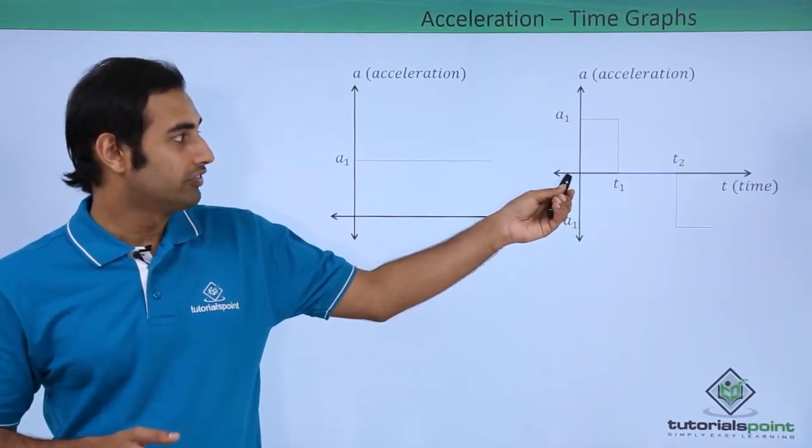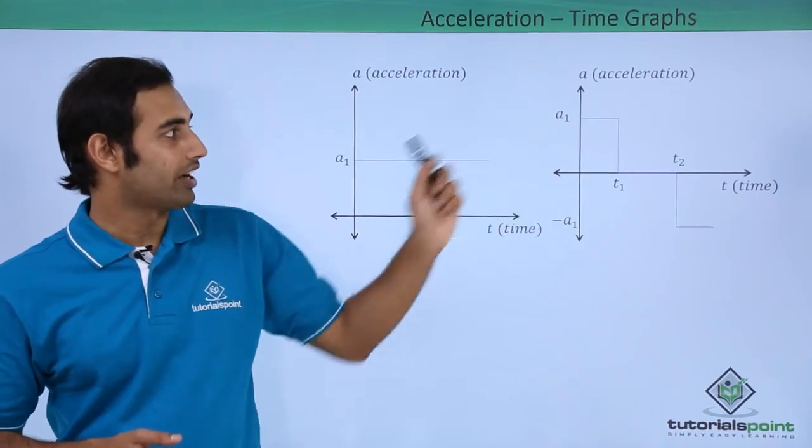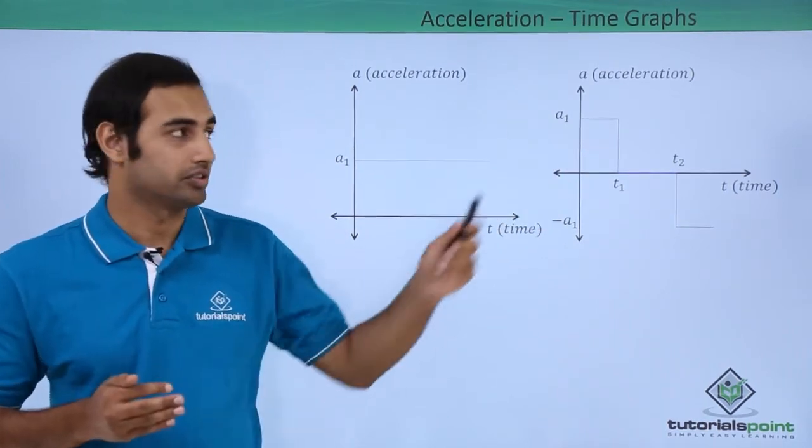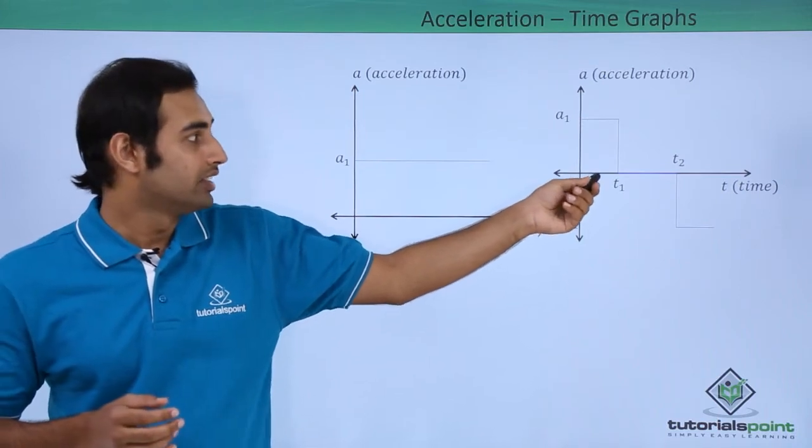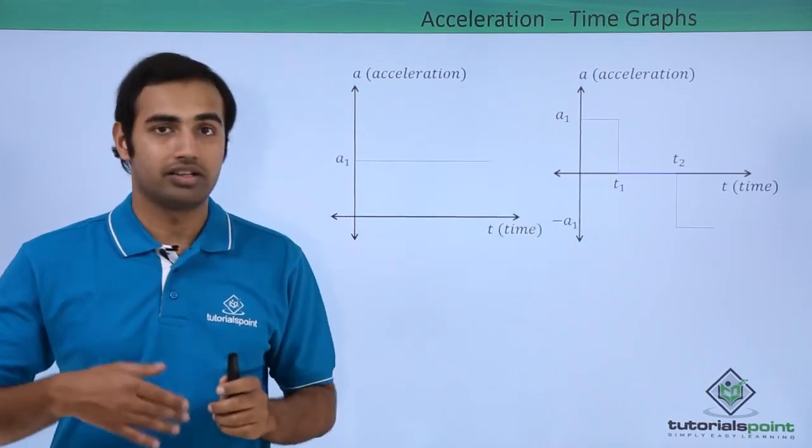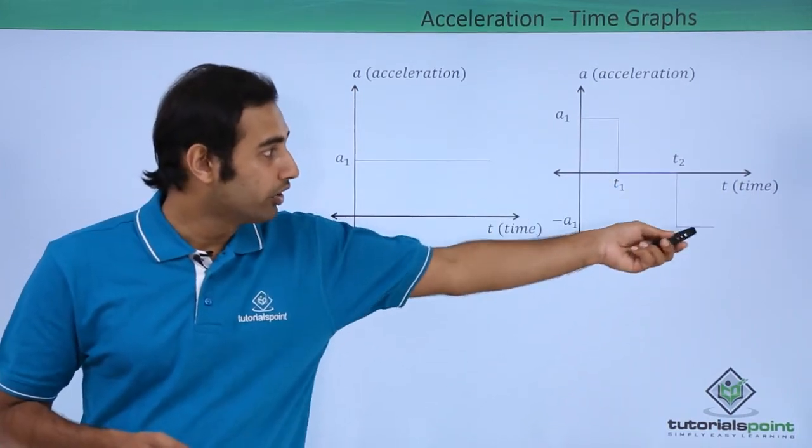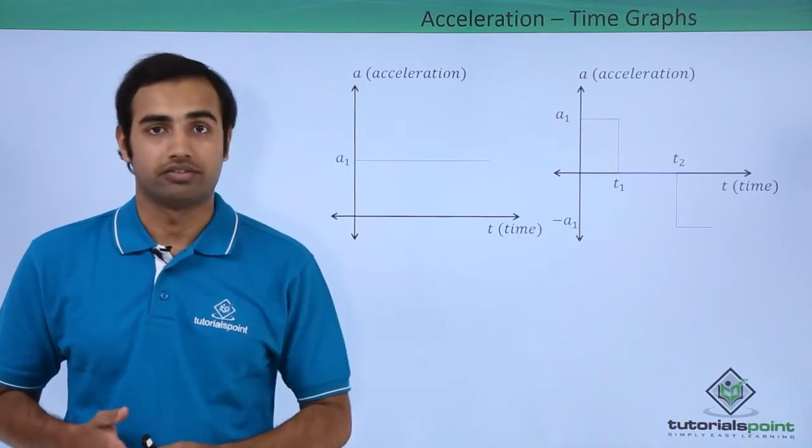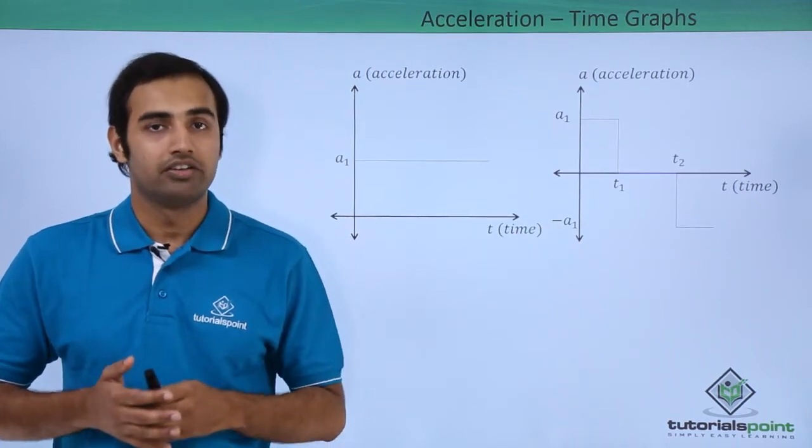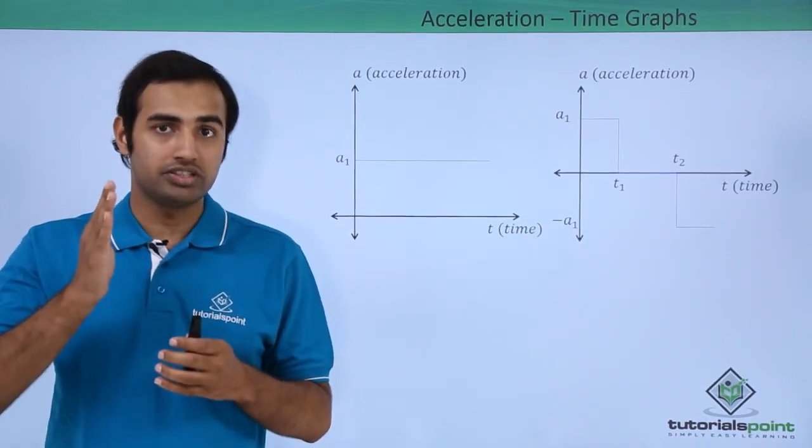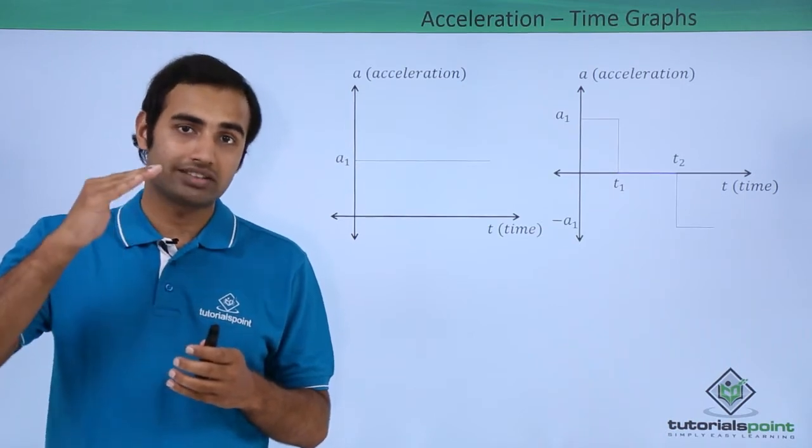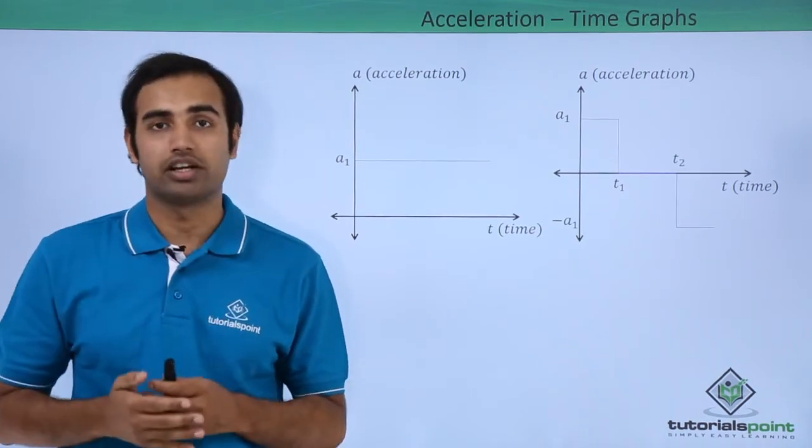In the second graph, between the first time interval 0 to t1, we have acceleration a1 which is clearly constant, parallel to time axis. Then between t1 to t2 we have acceleration 0, and then beyond t2 we have acceleration minus a1. Now how do we interpret this? We can say that for the first t1 seconds, the object was accelerating in the positive direction with the value a1.